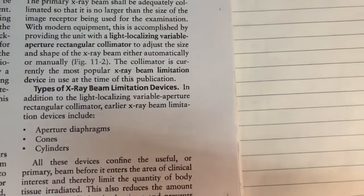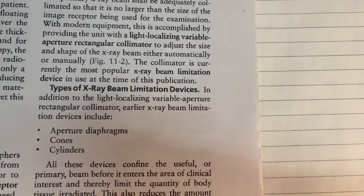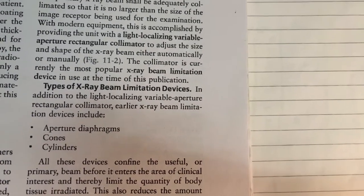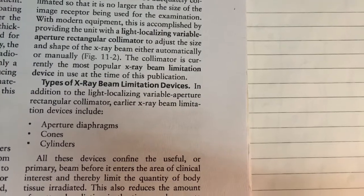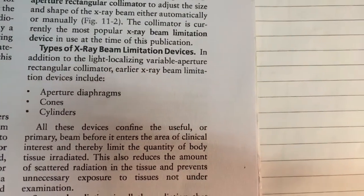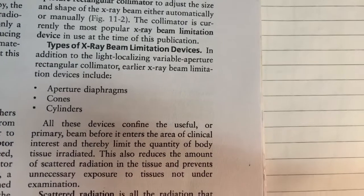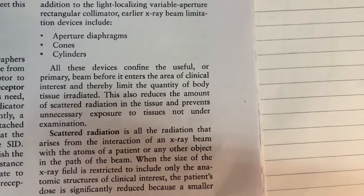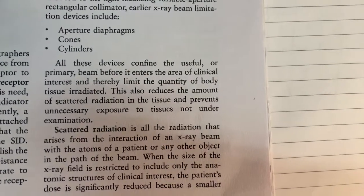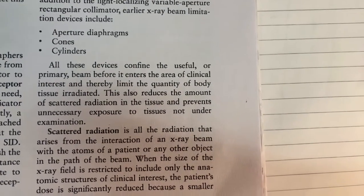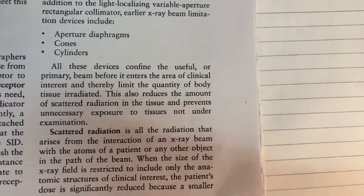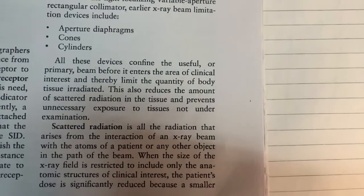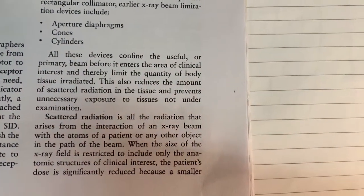In addition to the light localizing variable aperture rectangular collimator, earlier X-ray beam limitation devices include: aperture diaphragms, cones, and cylinders. All these devices confine the useful or primary beam before it enters the area of clinical interest, thereby limiting the quantity of body tissue irradiated.